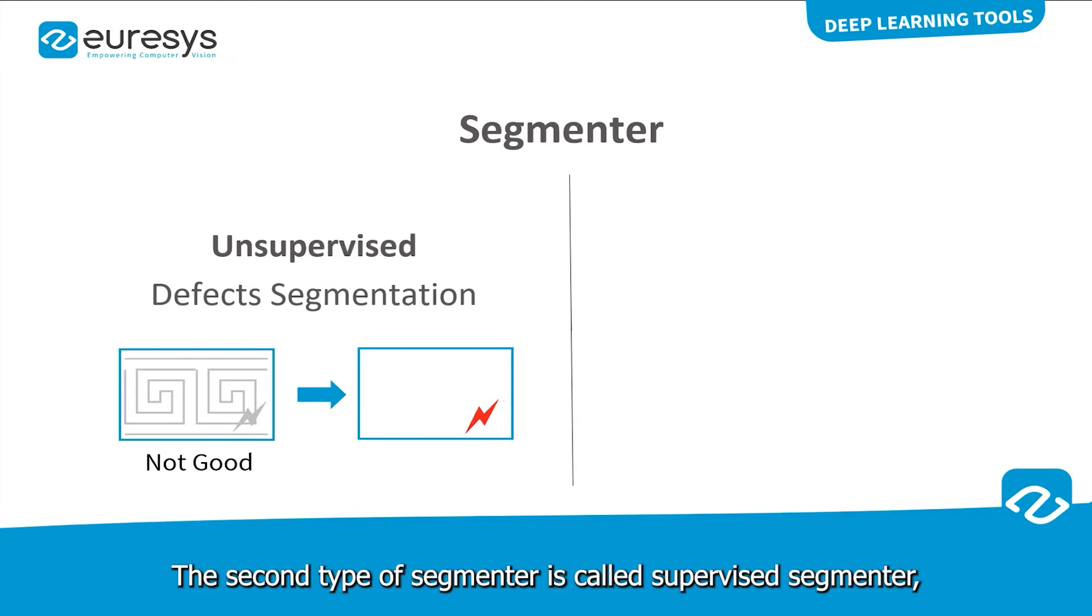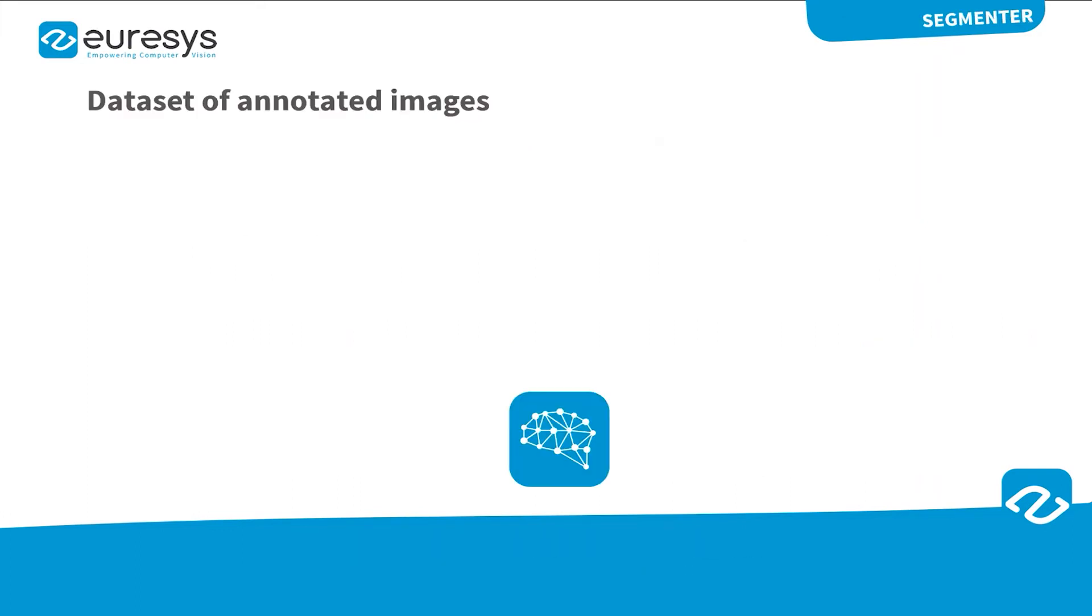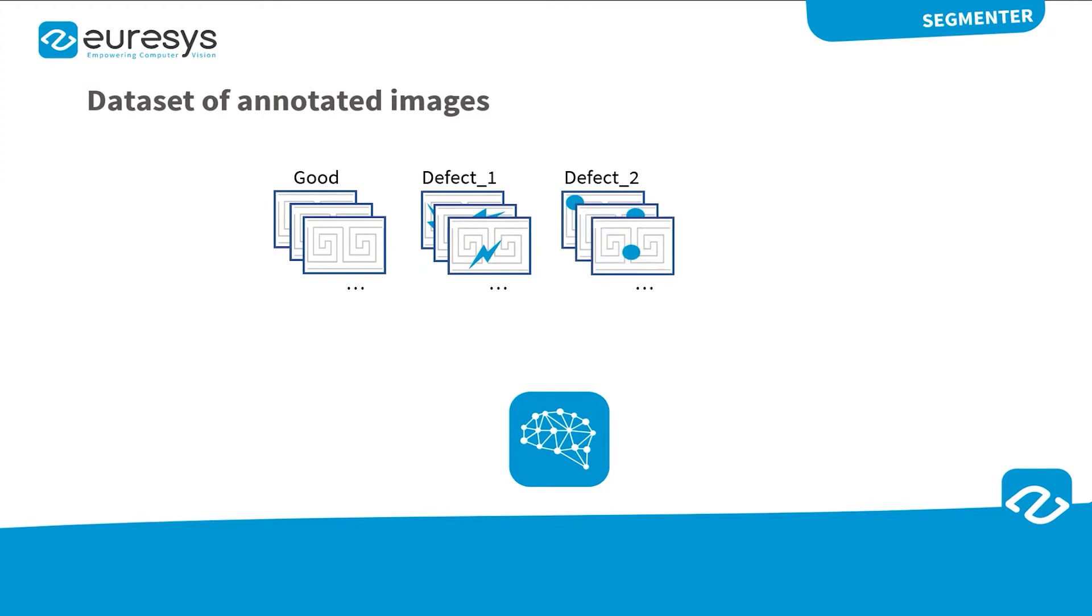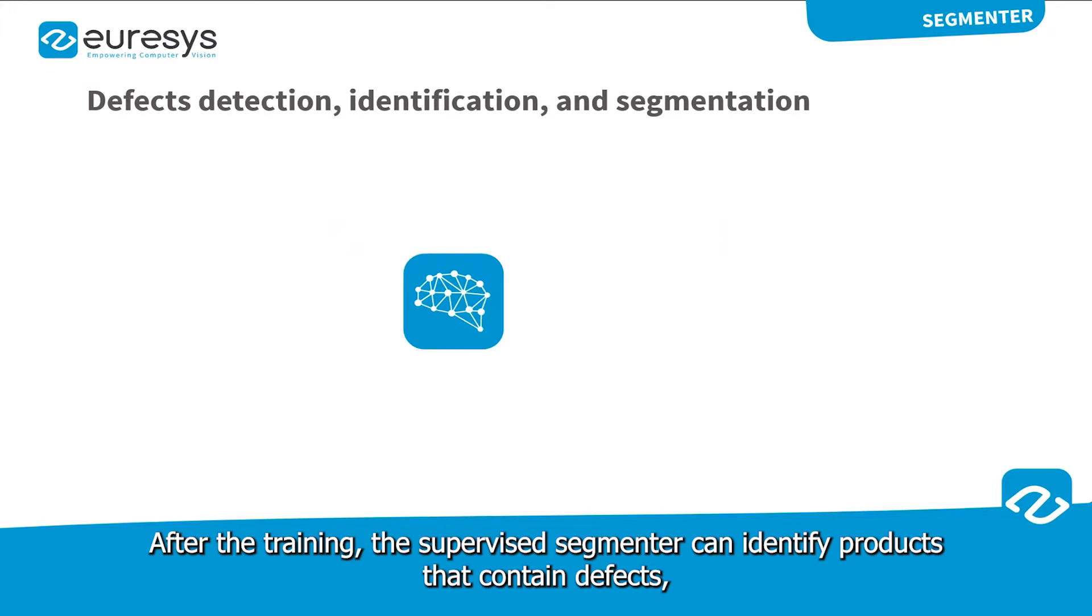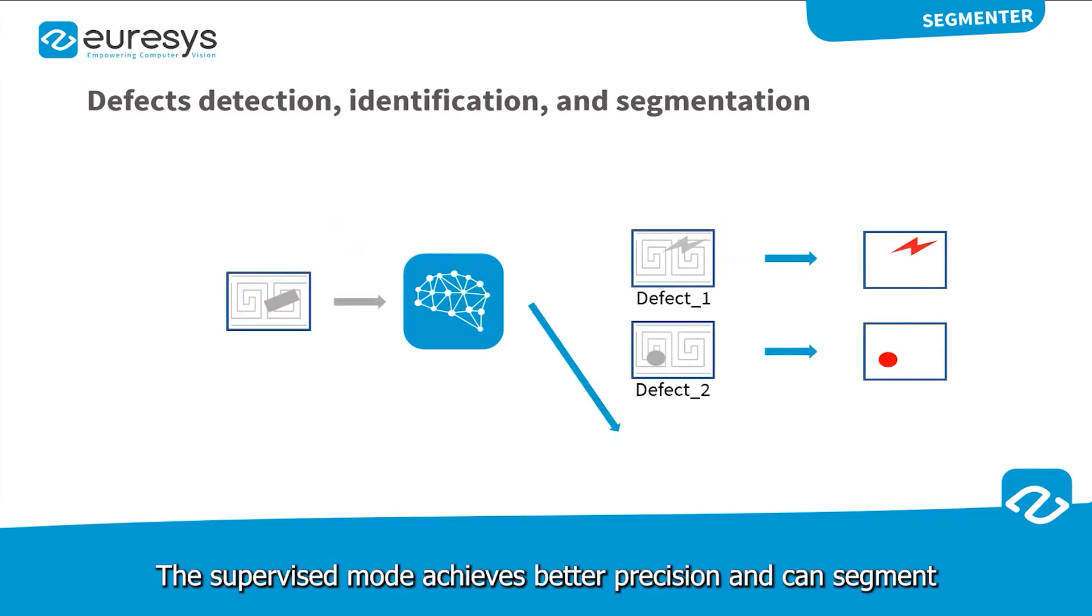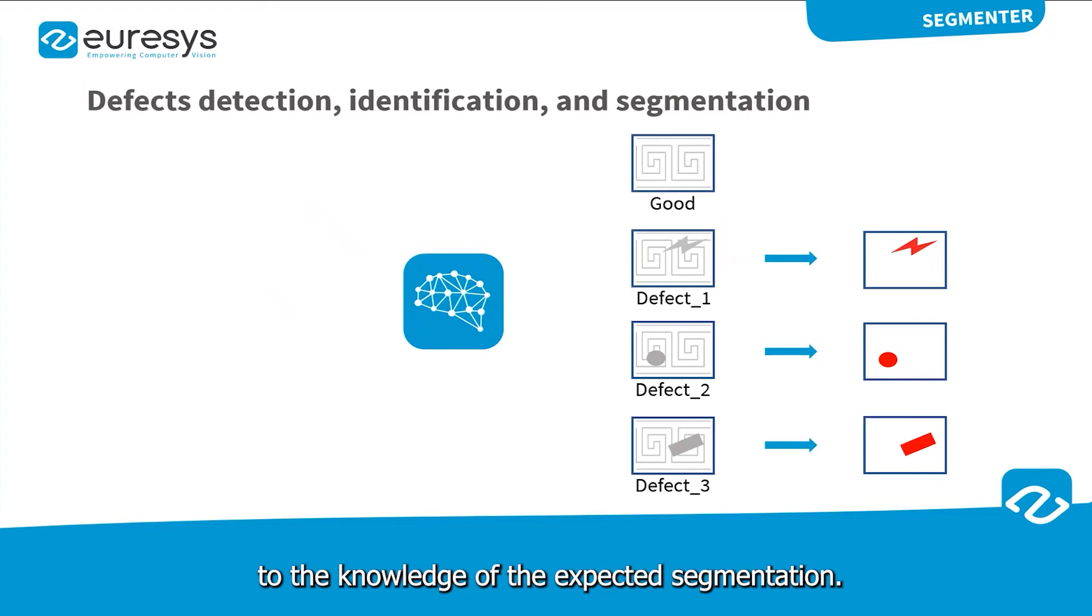The second type of Segmenter is called Supervised Segmenter. It is used for semantic segmentation. It works by learning a model of what is a good product and what is a defect. This is done by training the neural network with images annotated with the expected segmentation. After the training, the supervised segmenter can identify products that contain defects and precisely pinpoint where they are in the image. The supervised mode achieves better precision and can segment more complex defects than the unsupervised mode thanks to the knowledge of the expected segmentation.